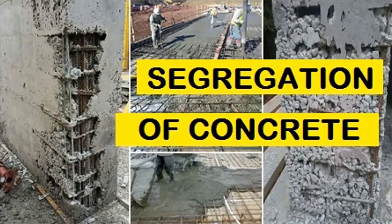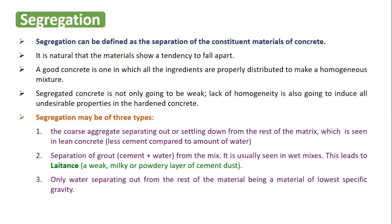In this video we are going to concentrate on segregation of concrete. Segregation can be defined as separation of the constituent materials of concrete — cement, fine aggregate, coarse aggregate, and water. This separation is a natural tendency because we are mixing materials of different specific weights or densities. For example, coarse aggregate has higher density whereas cement and water have lower density.